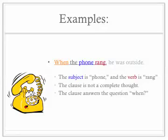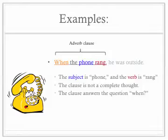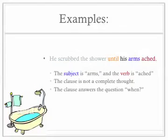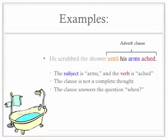So, if we look at a couple of examples. Here's one: when the phone rang, he was outside. Our adverb clause here is 'when the phone rang.' The subject is 'phone,' the verb is 'rang.' The clause is not a complete thought — if I just said 'when the phone rang,' you'd want to know what happened. And the clause answers the question: when. Here's another example: he scrubbed the shower until his arms ached. Here, 'until his arms ached' is the adverb clause. The subject is 'arms' and the verb is 'ached.' The clause is not a complete thought and could not stand on its own as a sentence. And the clause answers the question: when — until.